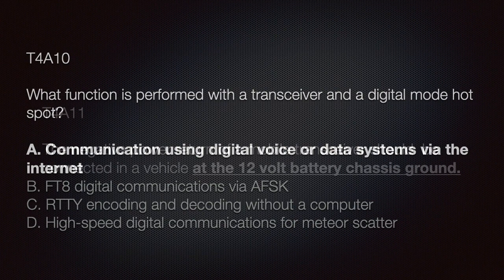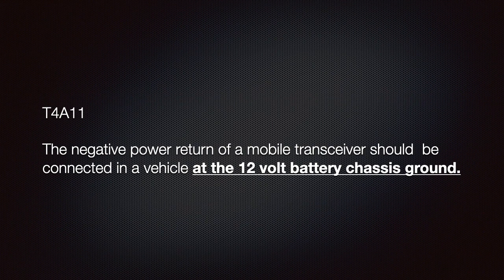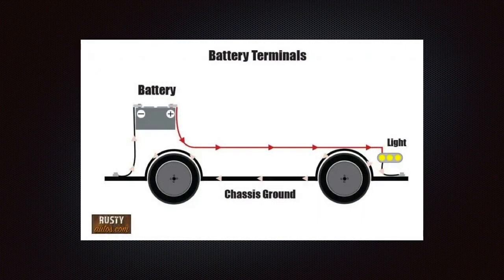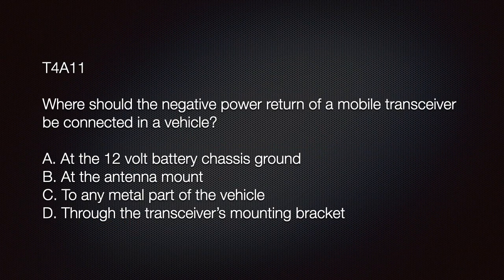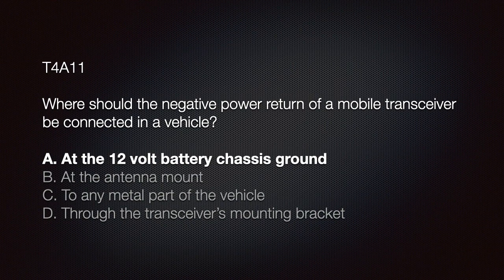We should remember that the negative power return of a mobile transceiver should be connected in a vehicle at the 12-volt battery chassis ground. The negative terminal of the battery is connected to the chassis. Some user manuals like the FT-7900R say to connect directly to the battery, which can be argued as chassis ground — but learn the test answer and leave the debate to engineers. The question is: where should the negative power return of a mobile transceiver be connected in a vehicle? A) The 12-volt battery chassis ground, B) at the antenna mount, C) any metal part of the vehicle, D) through the transmitter's mounting bracket. The correct answer is A.